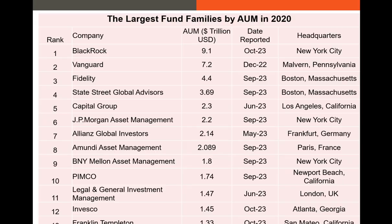What you're looking at are the largest mutual fund families in 2020 by assets under management. You're probably familiar with companies like BlackRock, Vanguard, and Fidelity — large companies that manage people's 401(k)s and IRAs. You can open an individual or joint account with them, and they allow you to invest on your own behalf or invest in one of the mutual funds they manage.